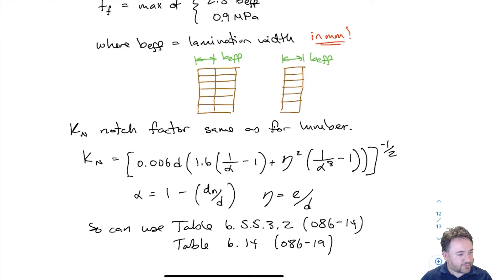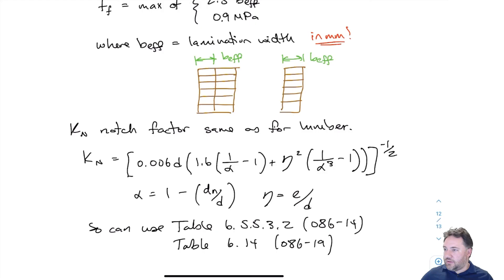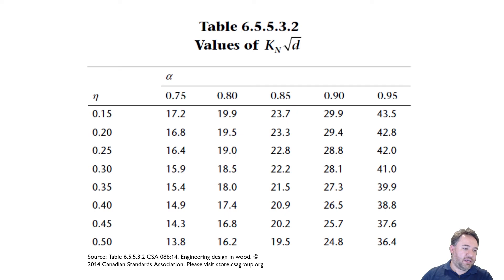The Kn equation involves alpha and eta, and includes the notch length E, the depth D, and the depth of the notch DN. Alternatively, I can use the tables in Chapter 6: I calculate alpha and eta, find Kn times the square root of D from the table, then divide by the square root of D to get my Kn for use in the equation.